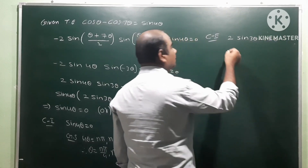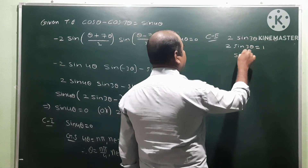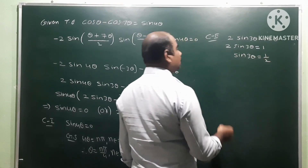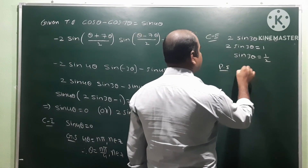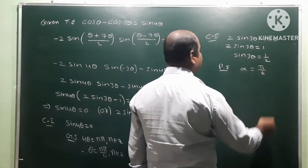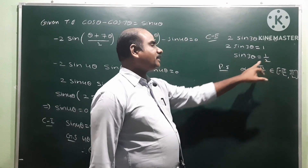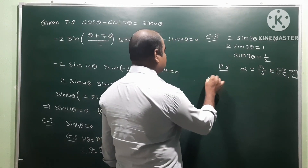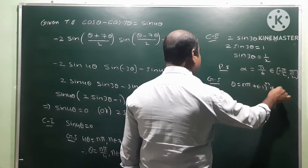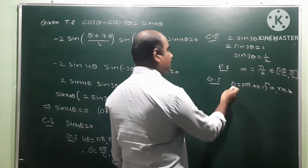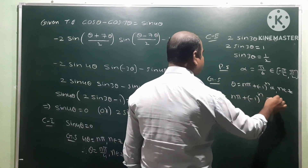Case 2: 2 sin 3θ minus 1 equals 0, so 2 sin 3θ equals 1, therefore sin 3θ equals 1/2. The principal solution: sin α equals 1/2 gives α equals 30 degrees, which is π/6, and π/6 belongs to [−π/2, π/2]. Applying the general solution formula: 3θ equals nπ plus (−1)^n times α, where α equals π/6, n ∈ ℤ.